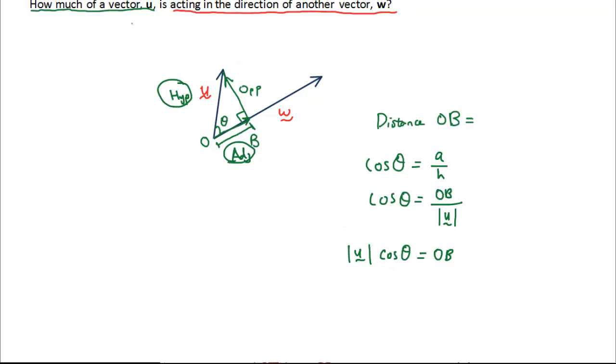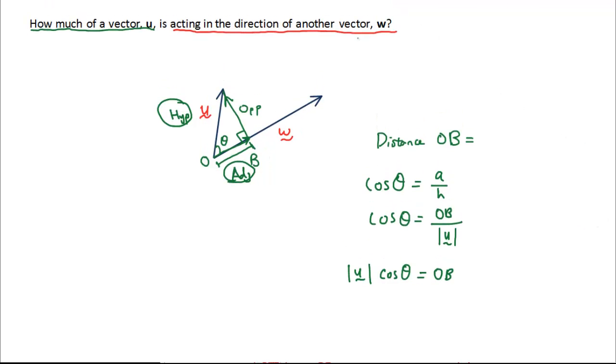So, how much of a vector u is acting in the direction of another vector w? All you need is the angle between u and w, and let's call it θ. And then, the answer is just the magnitude of u times cosθ, that's the answer.